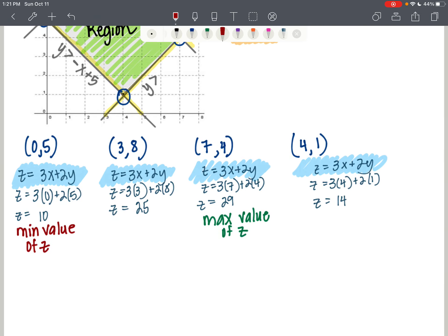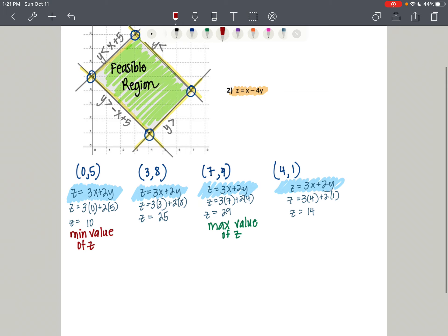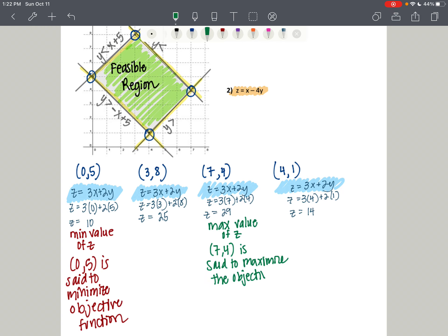So our max value is 7, 4 coming from, or is 29 coming from the ordered pair 7, 4. And the minimum value of z is 10 coming from the ordered pair 0, 5. So 0, 5 is said to minimize the objective function. And 7, 4 is said to maximize the objective function.